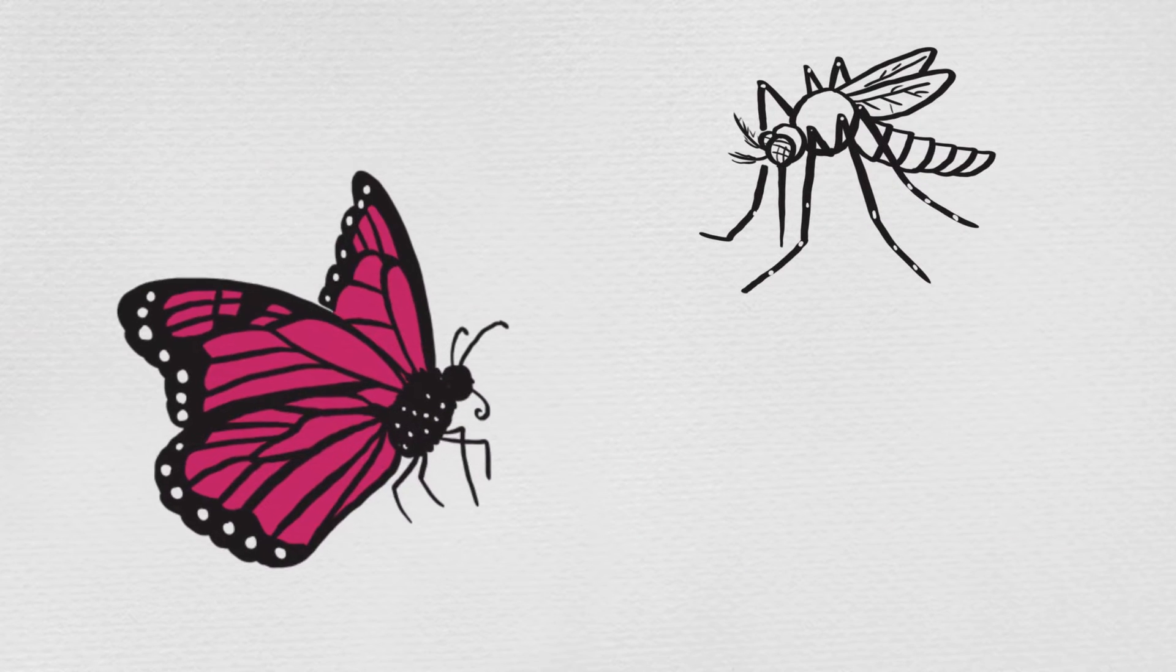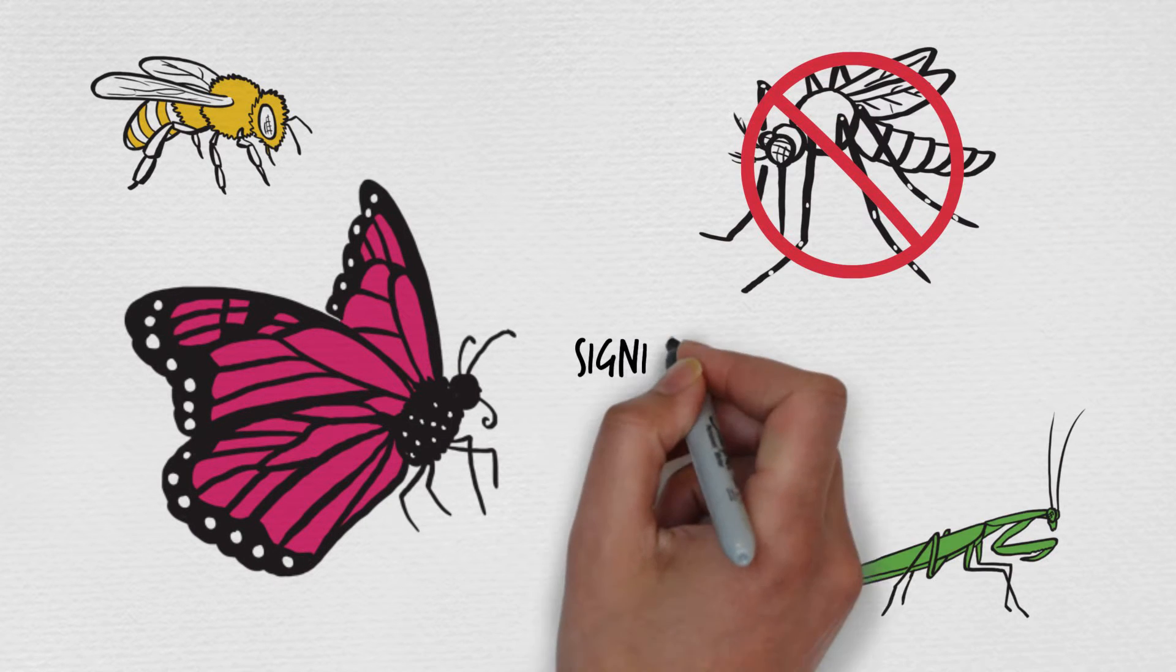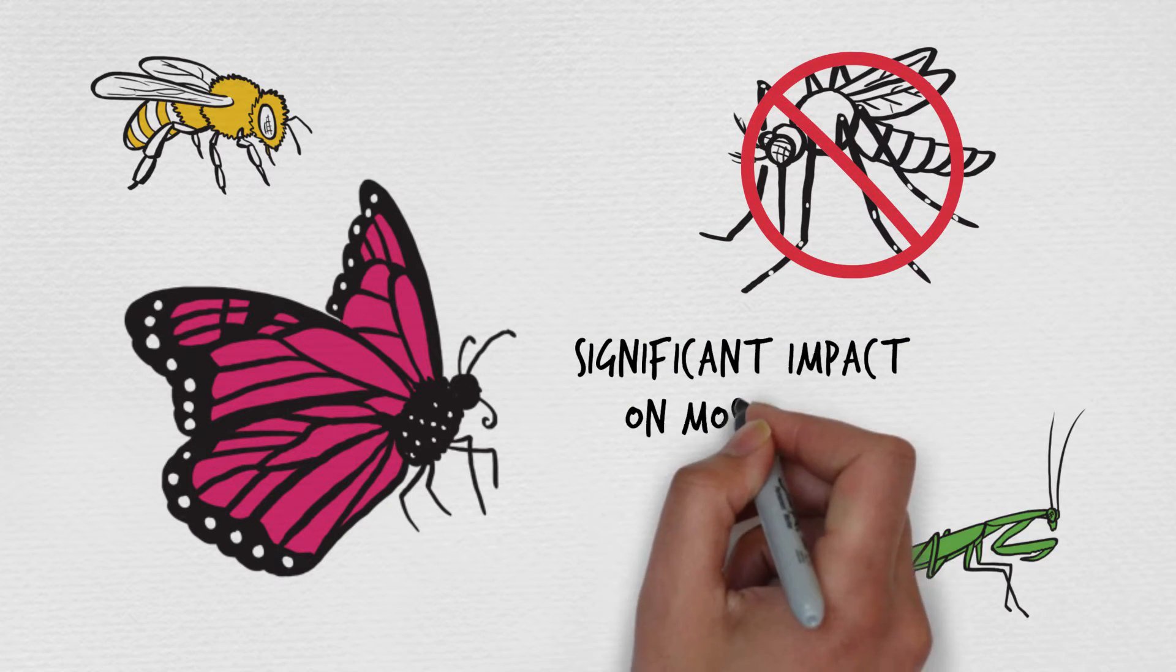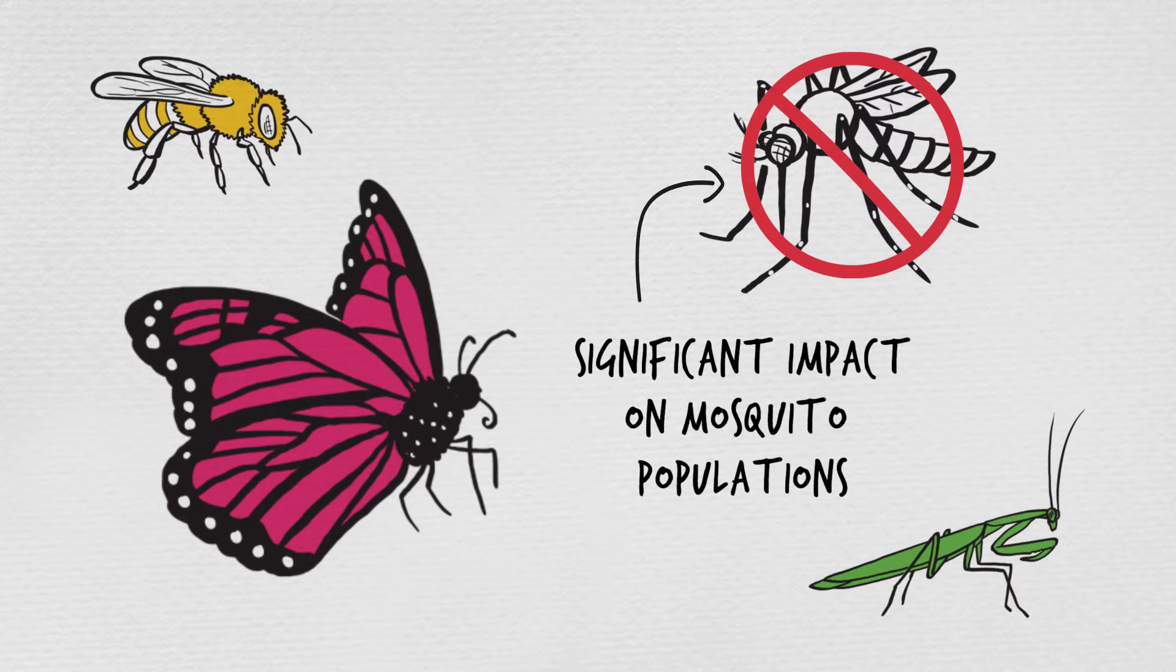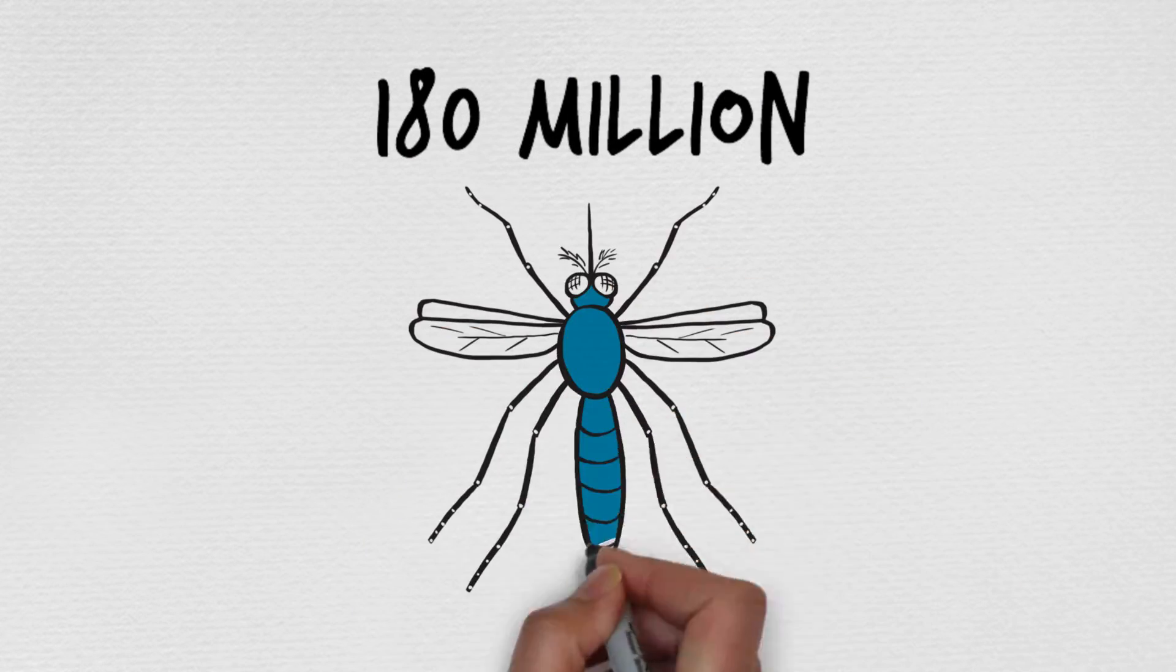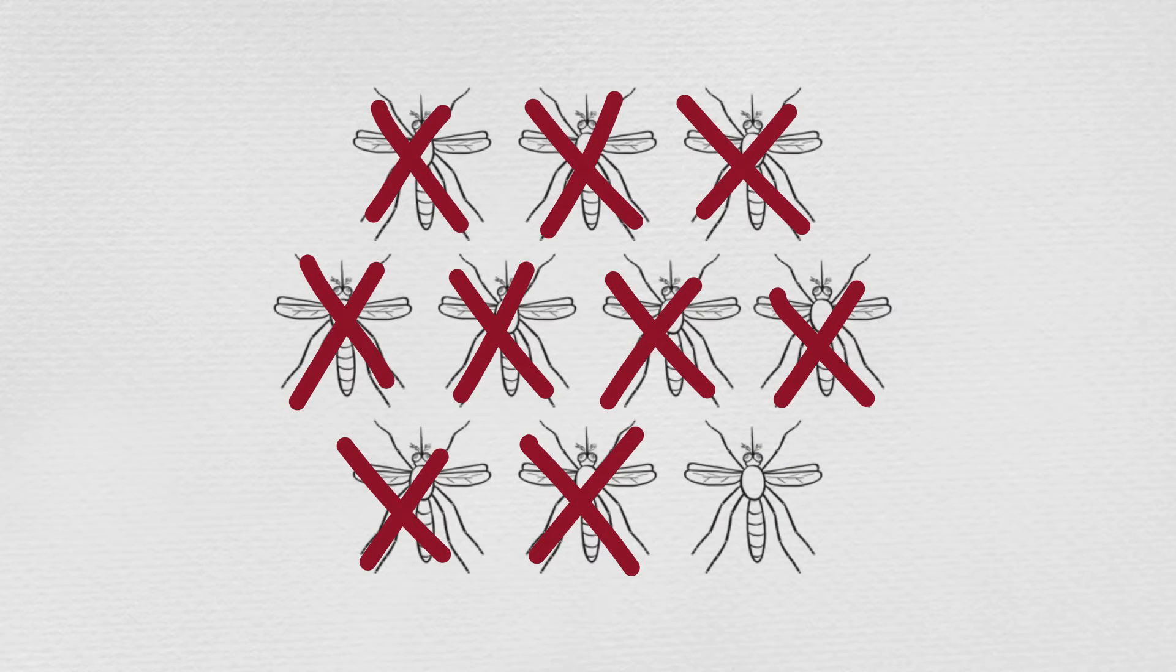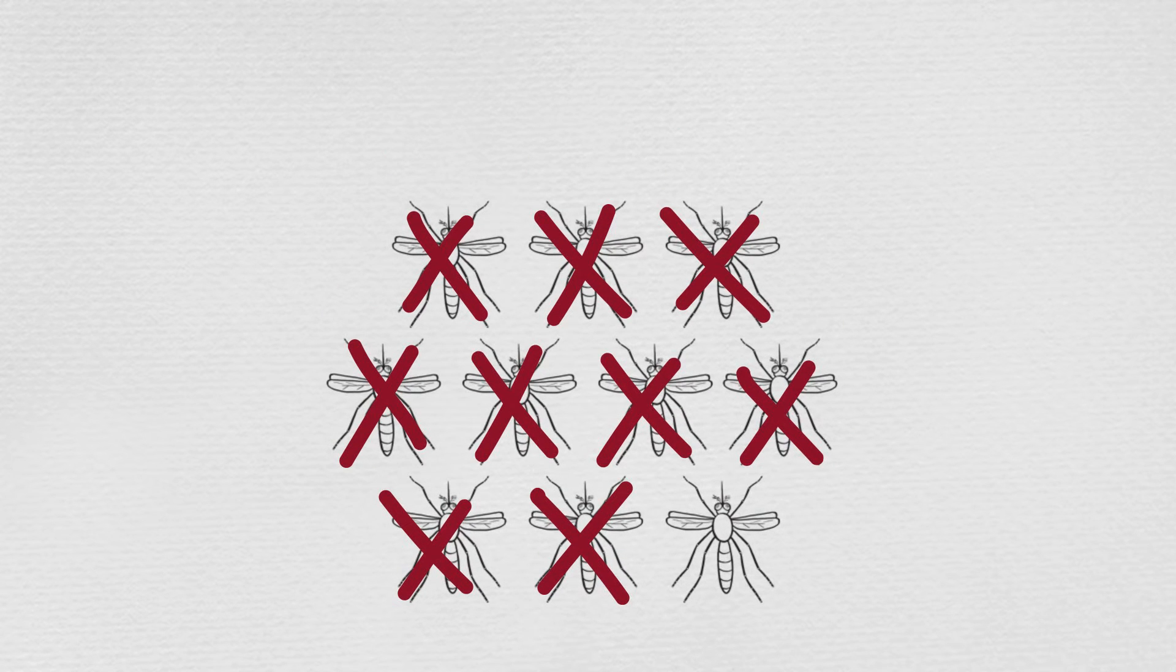Our solution targets Aedes aegypti where it lives, without affecting the surrounding ecosystem. And it's making a significant impact on mosquito populations in the treated areas. We've released over 180 million male mosquitoes to date, resulting in greater than 90% reductions of the wild population and unparalleled level of control.